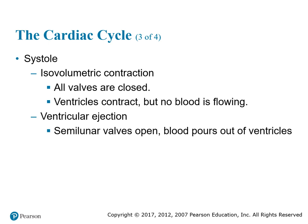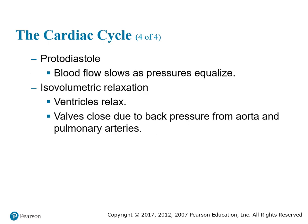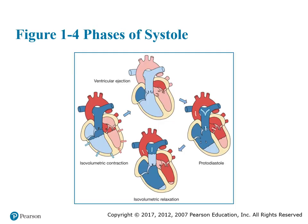During systole: first, isovolumetric contraction — all valves are closed, ventricles contract but no blood is ejected yet. Then ventricular ejection — semilunar valves open and blood pours out of the ventricles. Finally, isovolumetric relaxation — ventricles relax and valves close due to back pressure from the aorta and pulmonary arteries. These are the phases of systole.